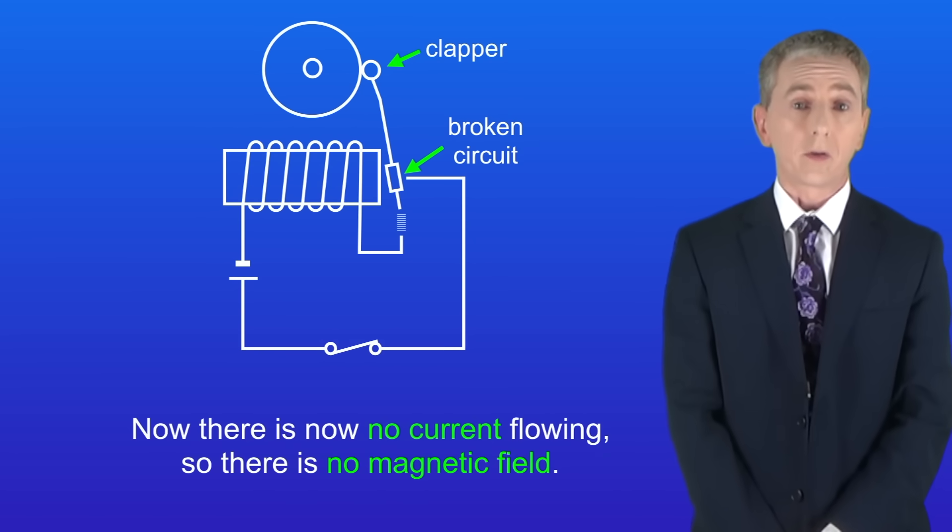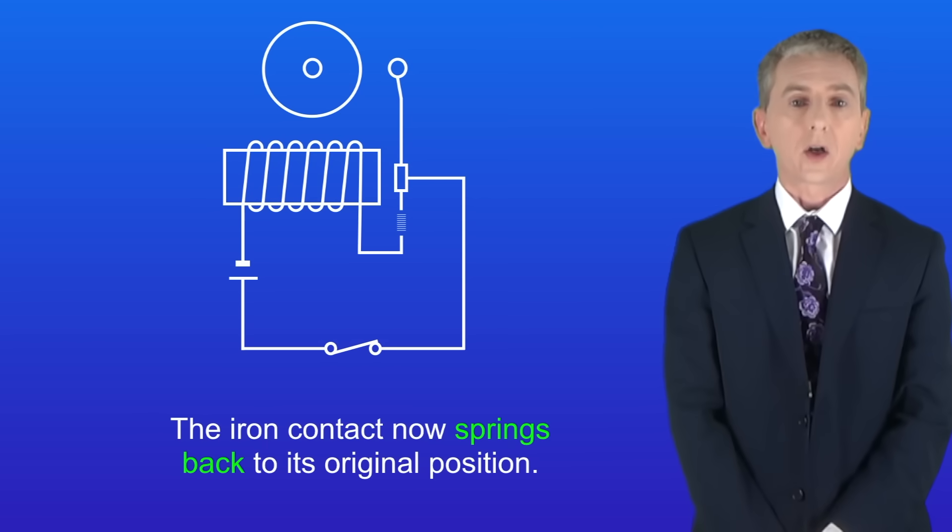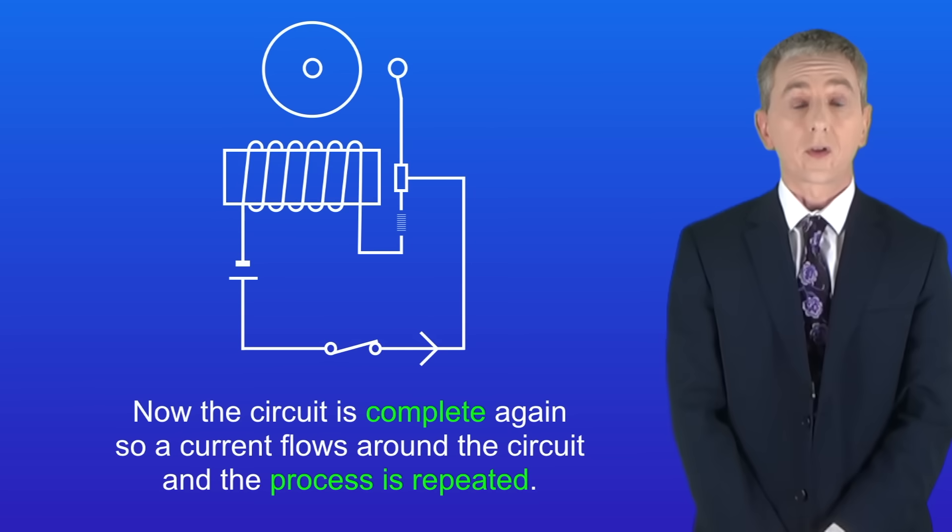Now there's no current flowing, so there's no magnetic field. The iron contact now springs back to its original position. Now the circuit is complete again, so a current flows around the circuit and the process is repeated.